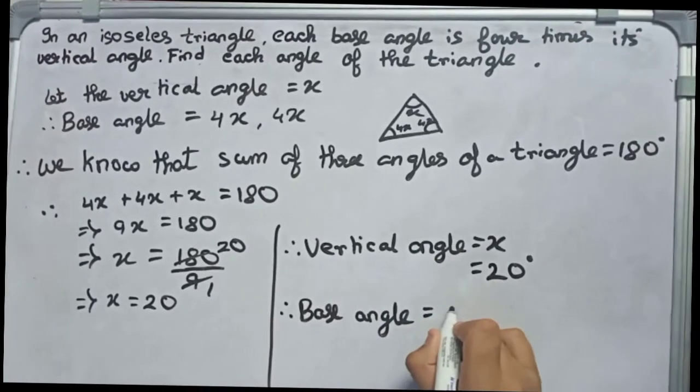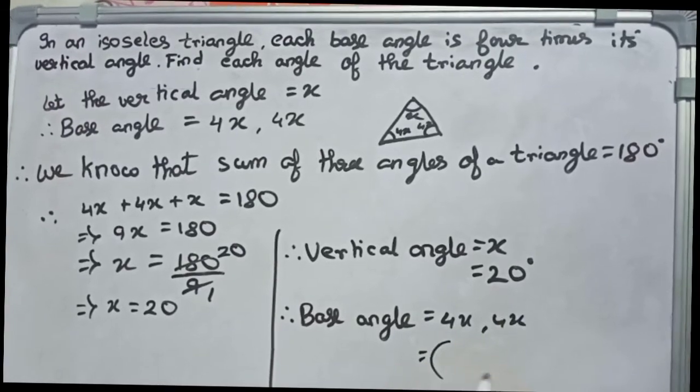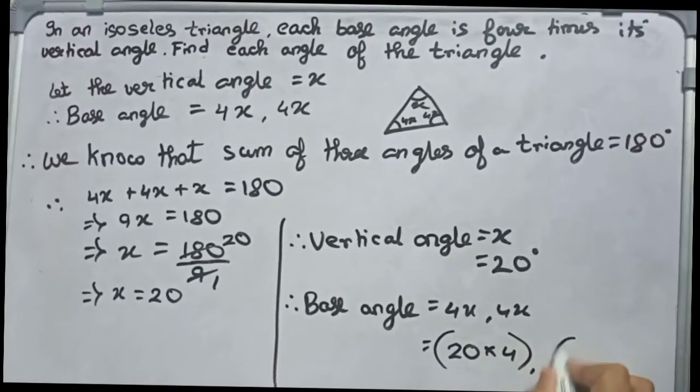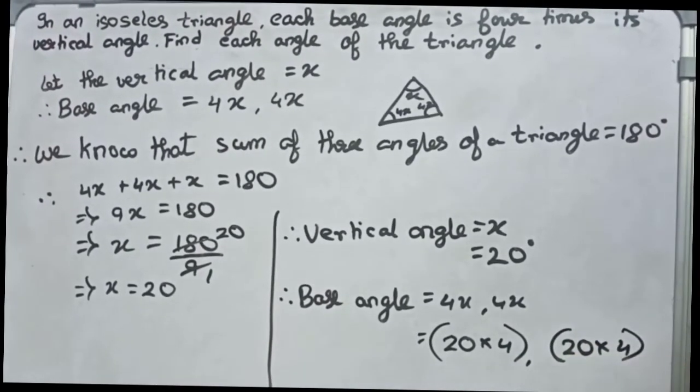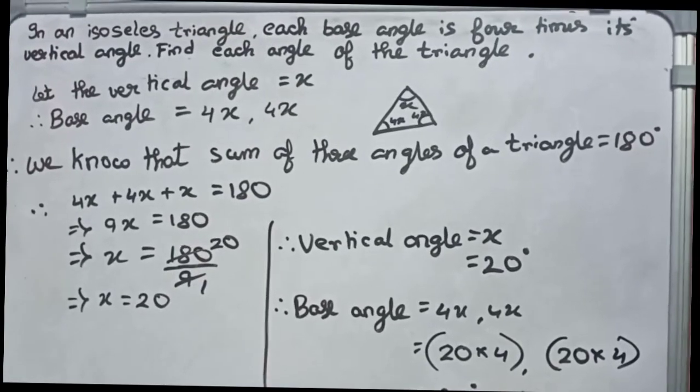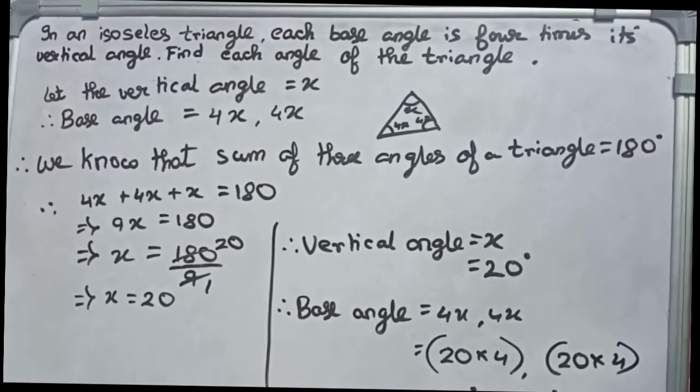equals 4x. So it will be 20 times 4, which equals 80 degrees. There are two base angles, so it becomes 80 degrees, 80 degrees.